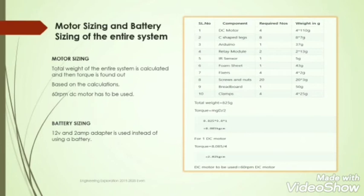Next is motor sizing and battery sizing. For motor sizing we calculated the total weight of the entire system, and then based upon that we calculated the torque. Based upon the calculations we came to the conclusion that 60 RPM DC motor has to be used. For battery sizing we have used 12V and 2A adapter.